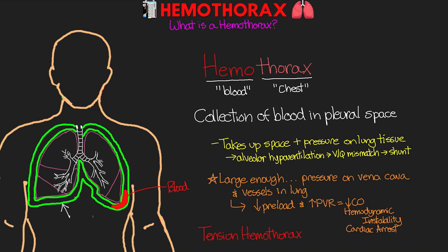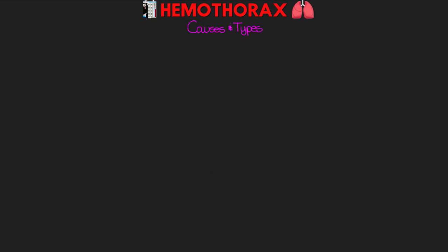Each hemithorax can hold more than 1500 mLs of blood. Bleeding here can lead to significant blood loss and potentially hypovolemic or hemorrhagic shock. Let's talk about some of the causes of this and the ways that we classify them.